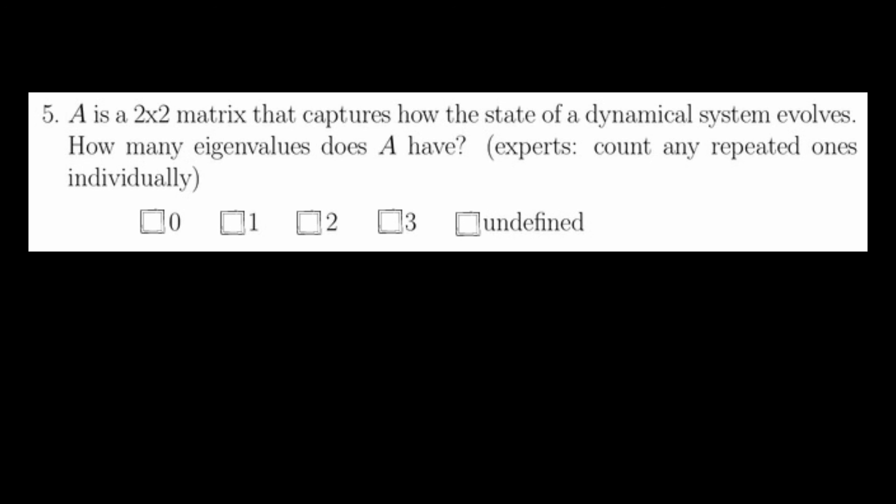For question 5, we just need to know how many eigenvalues a square matrix has. A matrix A, which is 2 by 2, has two eigenvalues, one for each dimension of the matrix.